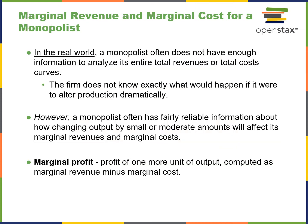Regarding marginal revenue and cost for a monopolist: in the real world, the firm doesn't always have enough information to analyze total revenue and cost curves. However, it often has fairly reliable information about changing outputs by small or moderate amounts, so it can tweak production and figure out how it will affect marginal revenues and cost. Marginal profit is the profit of one more unit of output, computed as marginal revenue minus marginal cost.